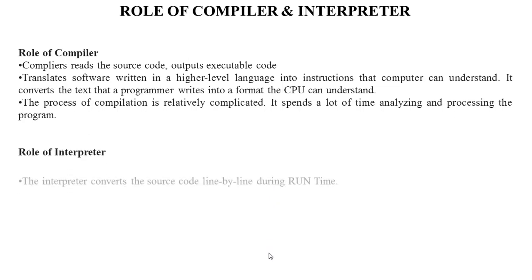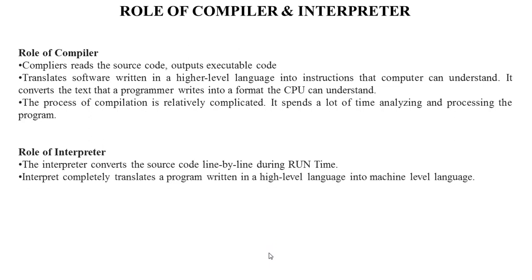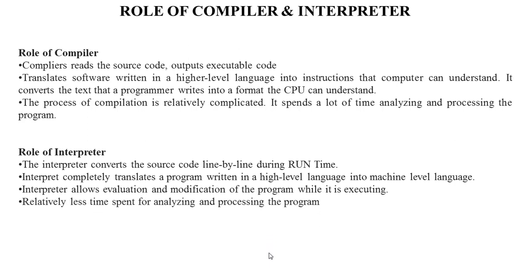The role of an interpreter: the interpreter converts the source code line by line during runtime. An interpreter completely translates a program written in a high-level language into machine-level language. It allows the evaluation and modification of the program while it is executing. Relatively less time is spent analyzing and processing the program, but program execution is relatively slow compared to a compiler. The two main reasons to use an interpreter are efficiency in certain environments and its simplicity.